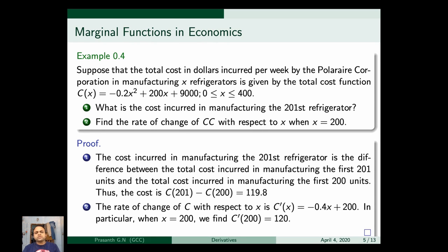The rate of change of C with respect to x is C'(x) = -0.4x + 200. When x = 200, we have C'(200) = 120. That is what we mean by the rate of change.